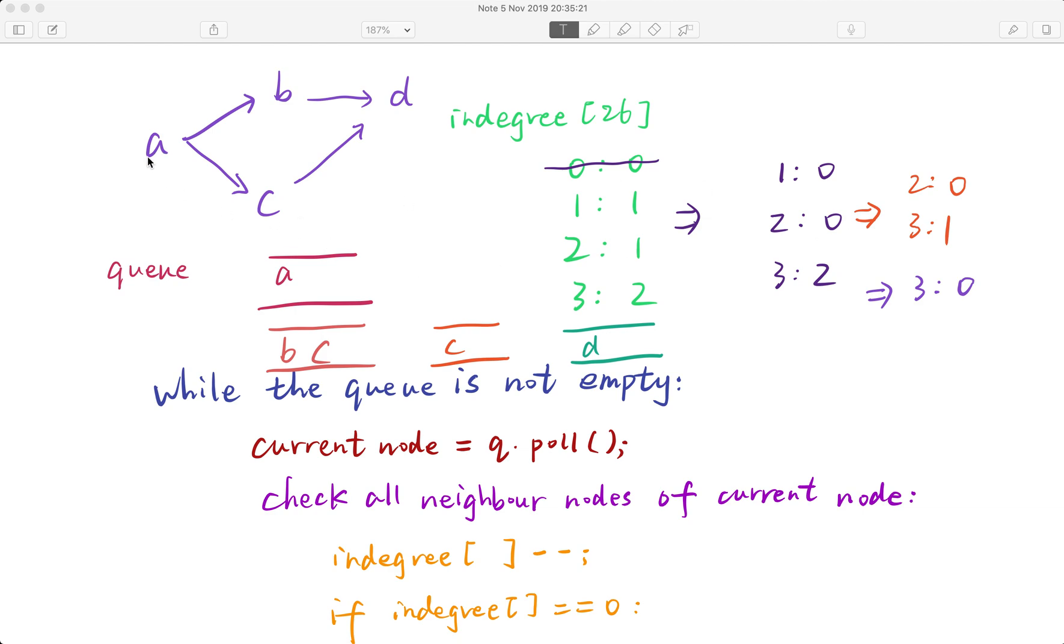Now the in-degree of b is 0 and the in-degree of c is also 0, because we already performed task a and now we can perform b or c. That means we just remove node a from this graph. Because the in-degree of b and c are also 0, we can offer b and c into the queue.